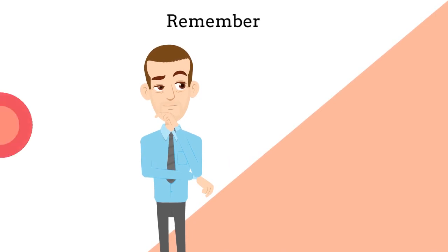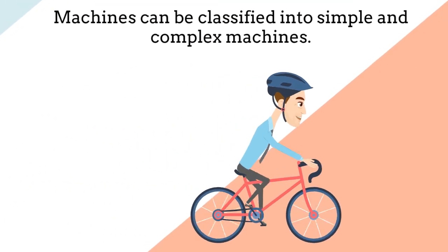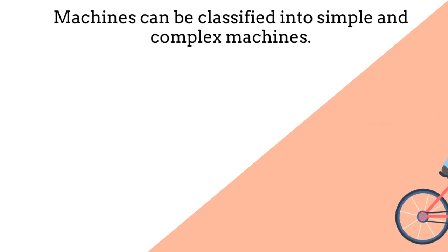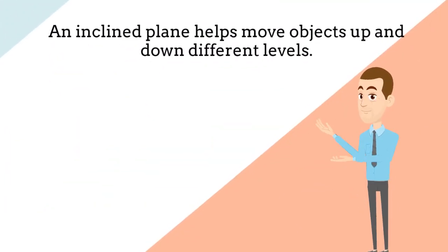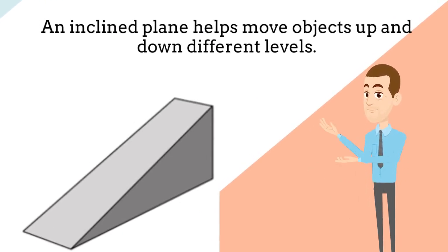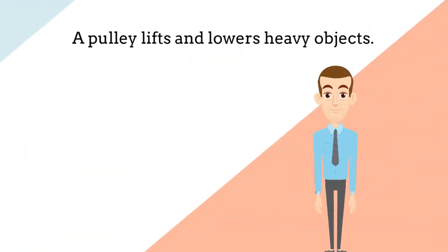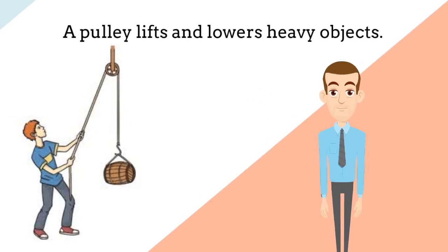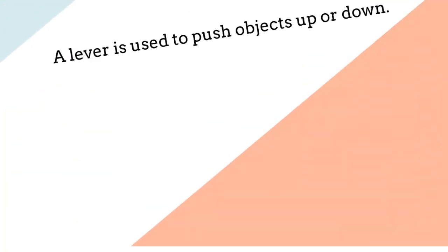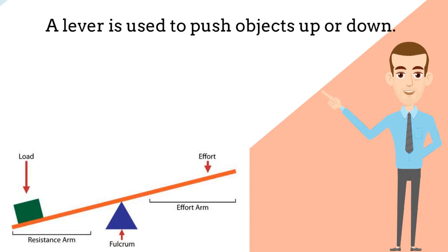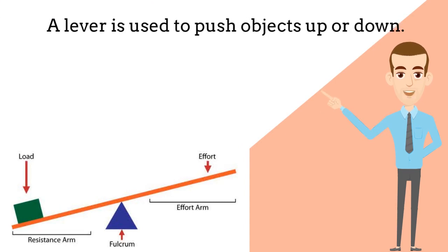Remember: Machines can be classified into simple and complex machines. Simple machines have few or no moving parts. An inclined plane helps move objects up and down different levels. A pulley lifts and lowers heavy objects. A lever is used to push objects up or down.